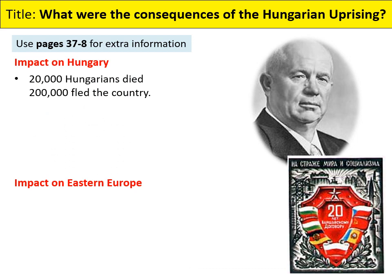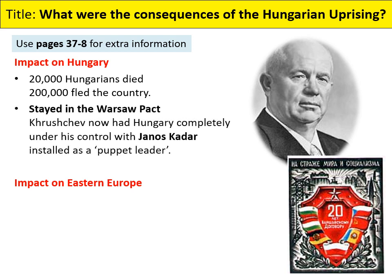The consequences of the Hungarian uprising can be sorted into three different categories: the impact on Hungary, the impact on Eastern Europe, and the impact on the Cold War as a whole. Last lesson we looked at the human costs for Hungarians — 20,000 died in the fighting and the reprisals afterwards, and 200,000 fled the country, most of whom never returned. Nagy himself was removed from power and later hanged, and he was replaced by Qadar, a puppet leader who would do whatever the USSR told him. Hungary would never again try to leave the Warsaw Pact until the very last years of the Cold War, when all of Eastern Europe and communism was crumbling.